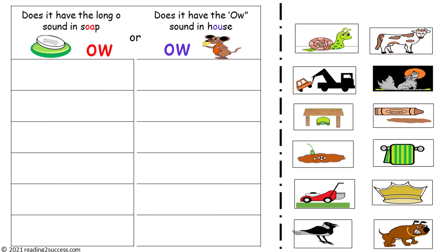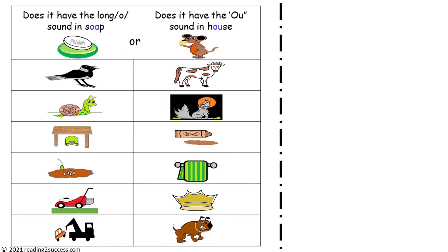The next activity is a sorting activity. All the words have the letters O-W, but kids are asked to sort them according to the sound O-W makes — is it the long O as in O-A, or is it the ow sound as in O-U? This is a completed example. The O-W words with the long O sound, as in soap, are: crow, slow, below, grow, mow, and tow. The O-W words with the ow sound, as in mouse, are: cow, howl, brown, towel, crown, and growl.